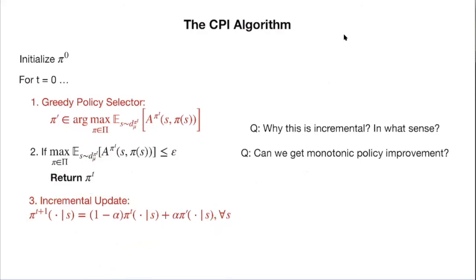The termination criterion: if no policy in the class can achieve a sufficiently large advantage against pi_t, we stop — we are at a local optimum. This is analogous to gradient descent stopping when the gradient magnitude falls below a threshold, indicating a local (or global if convex) minimum.